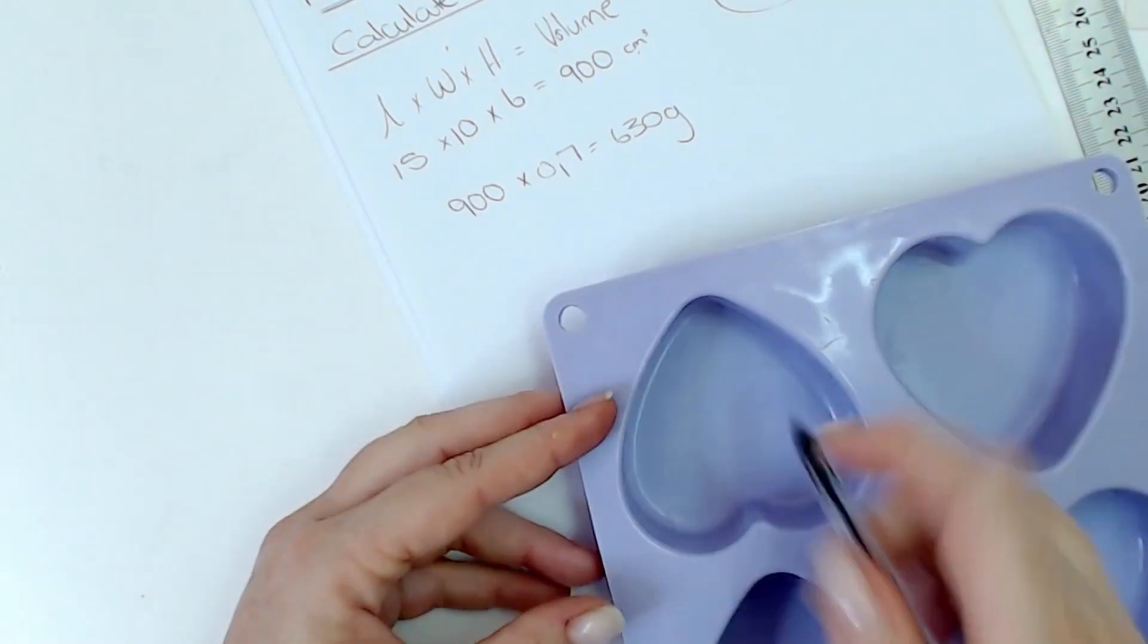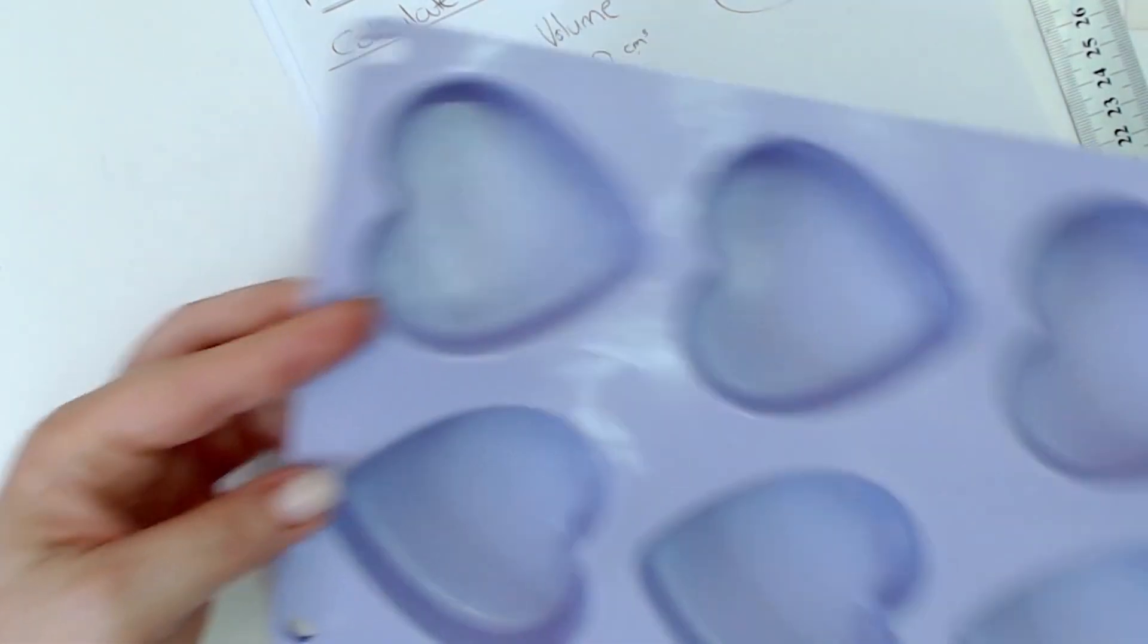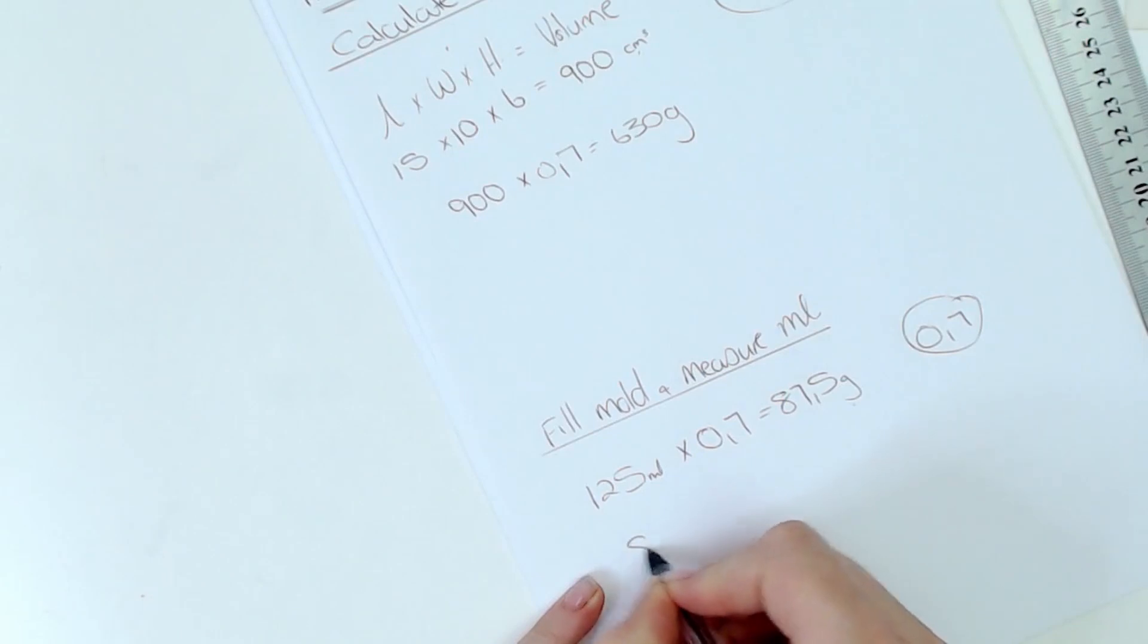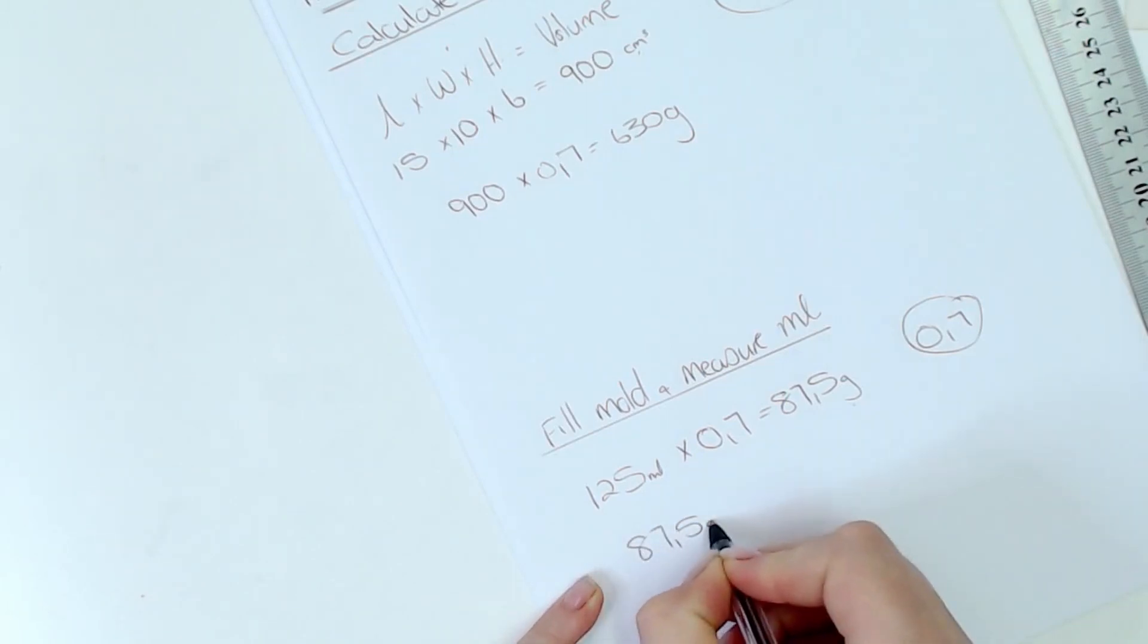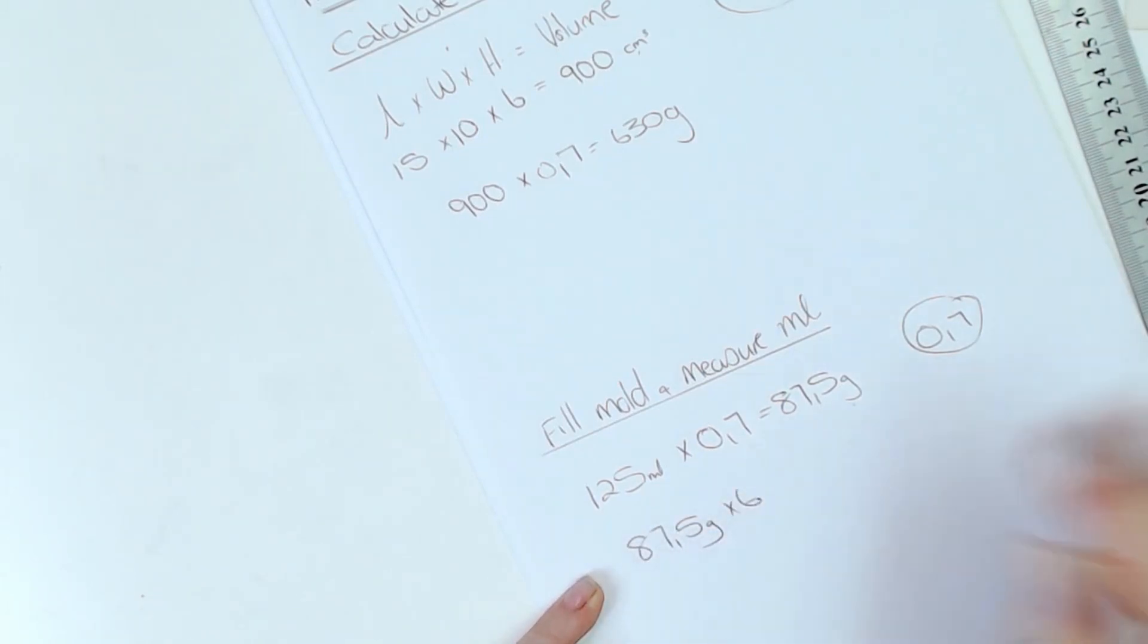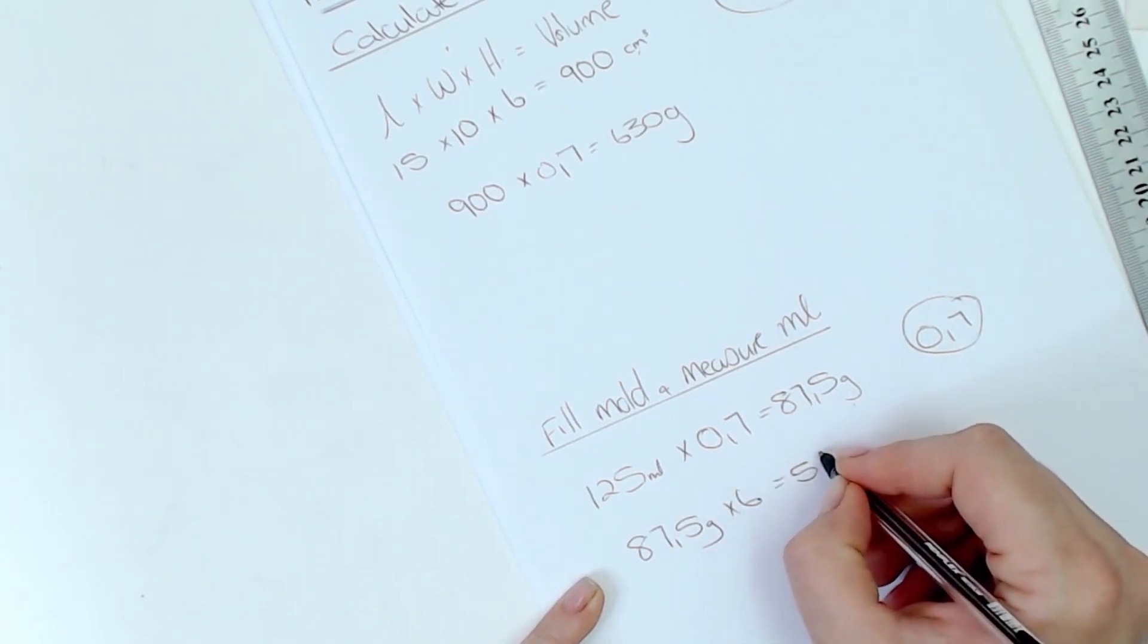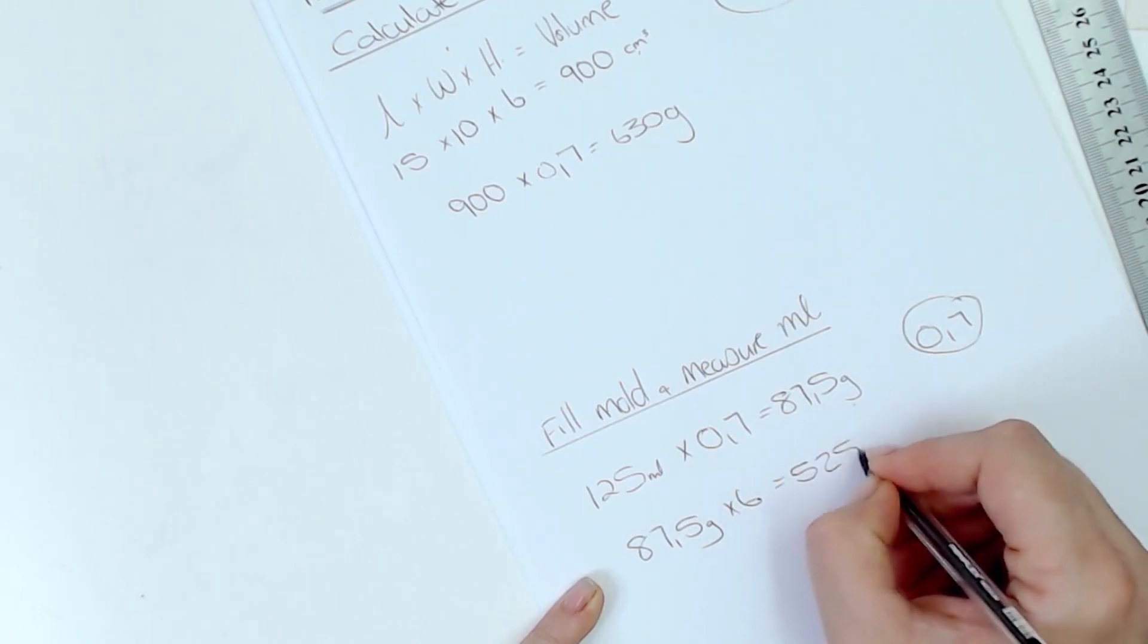But you must remember this soap mold has got six cavities here, so I'm going to take the 87.5 grams times six because there's six cavities. So the total amount of oil that I'm going to need for this specific mold is 525 grams of oil.